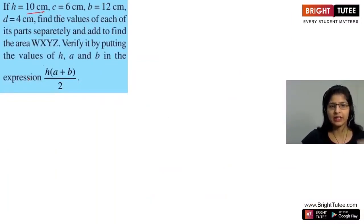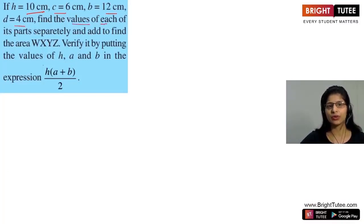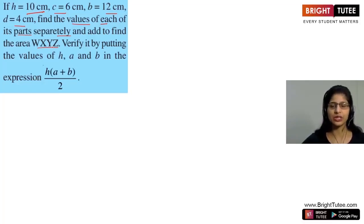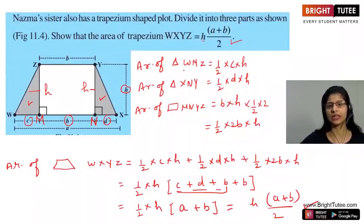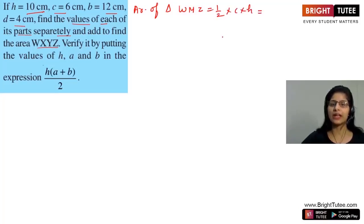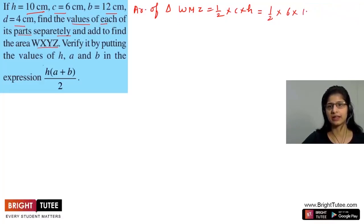The next question uses the same figure. H is 10, C is 6, B is 12 cm, D is 4 cm. Find the values of each of its parts separately and add to find the area of WXYZ. First we find area of triangle WMZ: half into C into H, which is half into 6 into 10. That gives us 30 square centimetres.